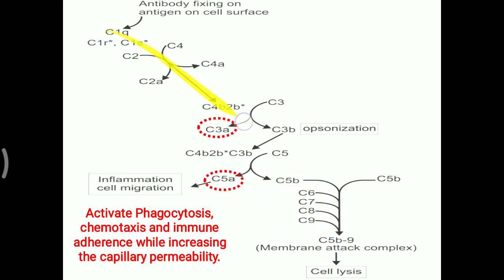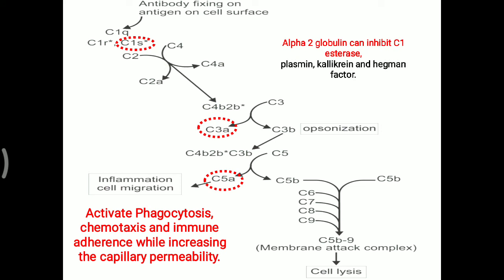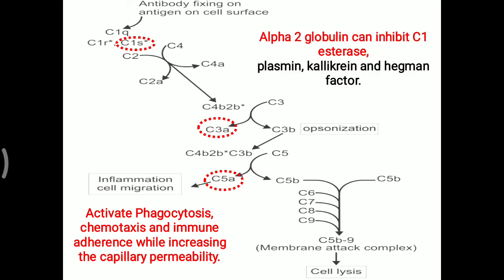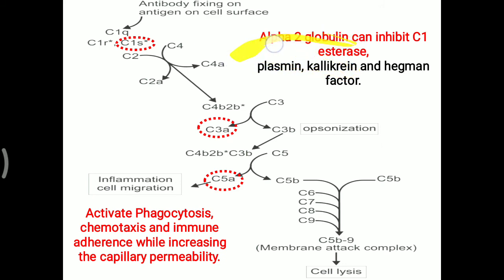C1S, which provides the important proteolytic activity in the cascade, can be inhibited by alpha-2 globulin. Alpha-2 globulin can inhibit C1 esterase, and also inhibits plasmin, kallikrein, and Hageman factor.